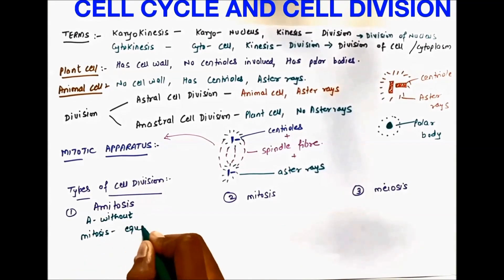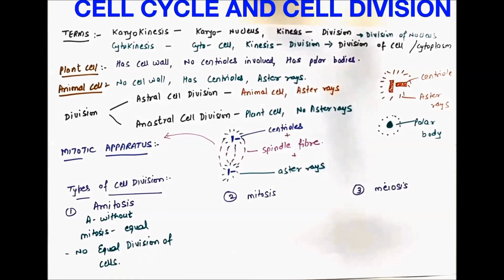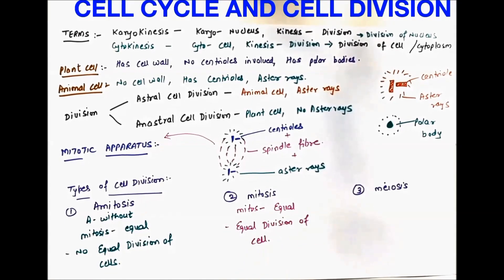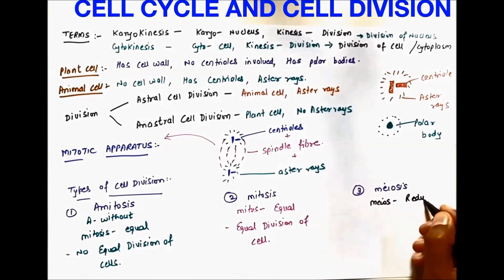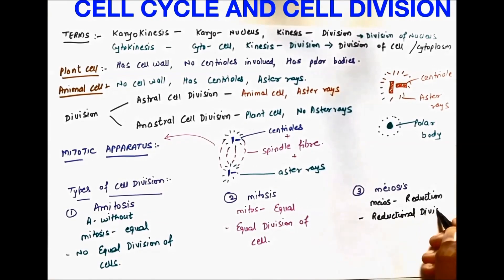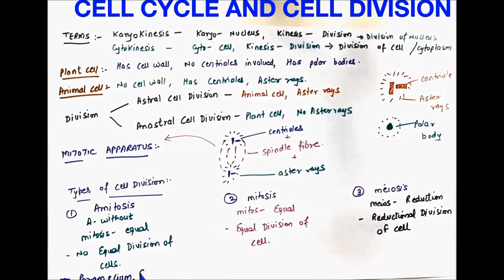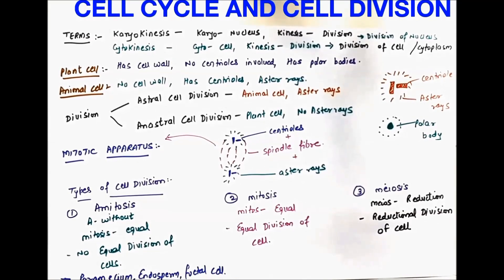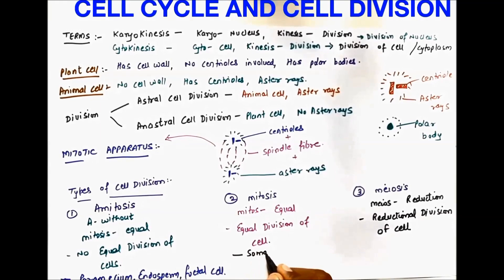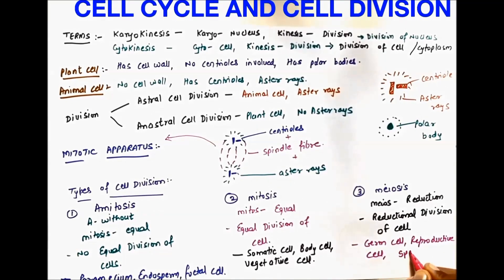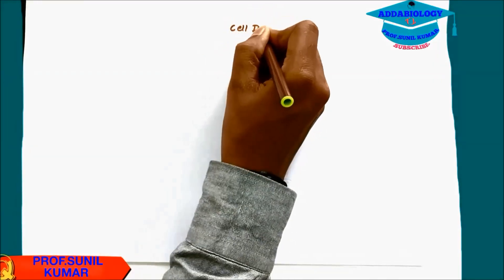Amitosis — 'a' means without, so there is no equal division. Mitosis means equal division of the cell. Meiosis is reductional division. Amitosis occurs in paramecium, endosperm, and fetal cells. Mitosis occurs in somatic cells, body cells, or vegetative cells. Meiosis occurs in germ cells, reproductive cells — sperm, ovum, gametes, etc.